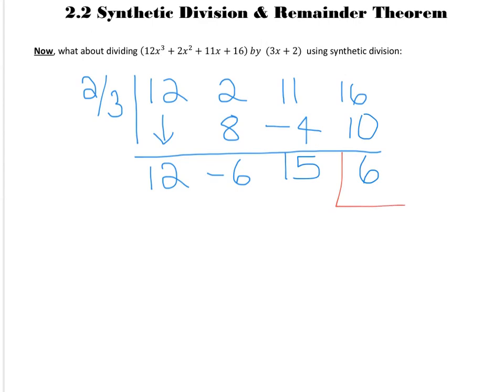So I just kind of like to separate here. Our remainder is 6. Nothing is weird about that. Now, this is our quotient.